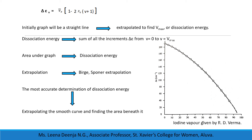Such a linear extrapolation was first suggested by Birge and Sponer and is known as the Birge-Sponer extrapolation. The most accurate determination of dissociation energy is obtained by extrapolating the smooth curve and finding the area beneath it. This process is illustrated using data on iodine vapor given by R. D. Verma.